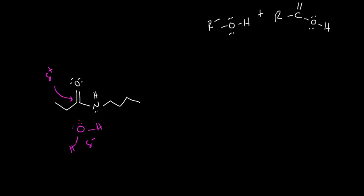In the first step, a lone pair from the nucleophile reaches out, forms a covalent bond with the electrophile, and a pair of electrons from the double bond get pushed up to the oxygen. That's step number one.